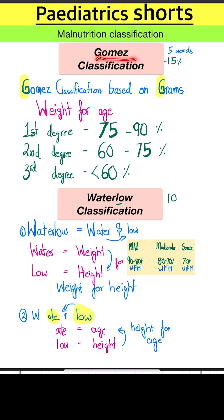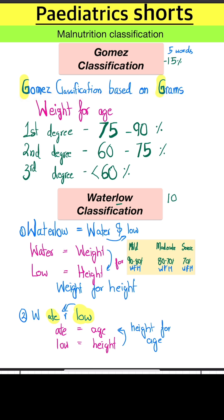For Gomez classification, remember that Gomez classification is based on grams. G is for Gomez, G is for grams. Gomez has five words, so it's minus 15%. So it's weight for age — grams for age.